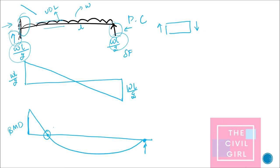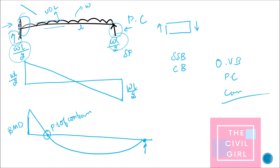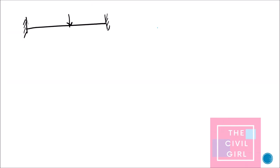This point is what we call the point of contraflexure. It will not be present in simply supported beams or cantilever beams — it will be present only in overhanging beams, propped cantilevers, and continuous beams.